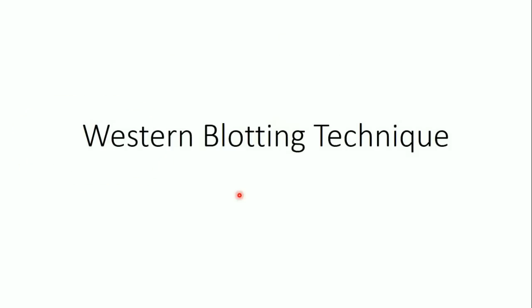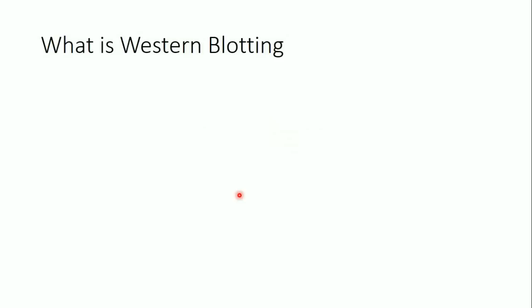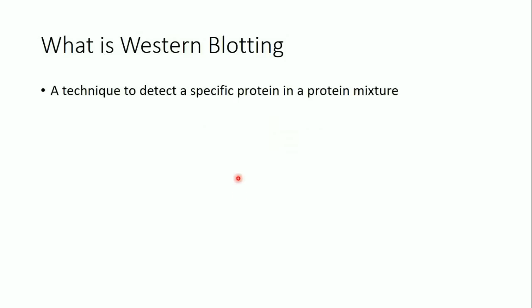Let's start speaking about western blotting technique. Western blotting is a technique used to detect proteins — specifically, to detect a specific protein in a protein mixture. Let's say that I have a protein extract from a cell, a prokaryotic cell or a eukaryotic cell, and I have a protein mixture. I'm interested in detecting a specific protein in this mixture, and that's when I use western blotting.